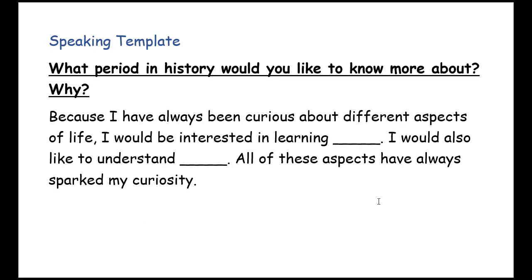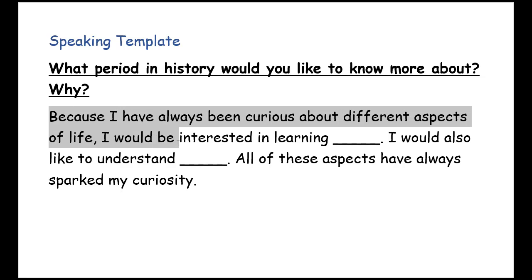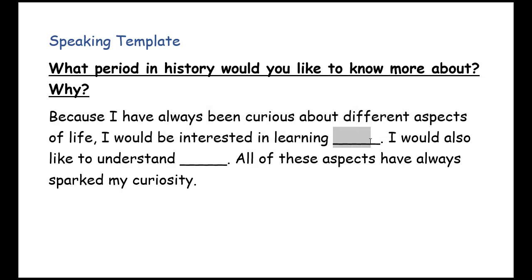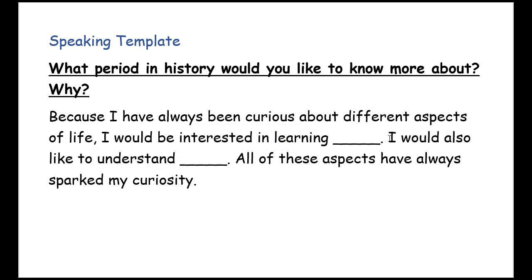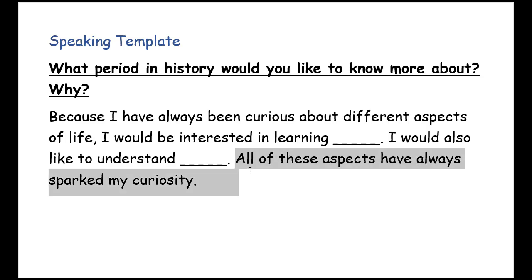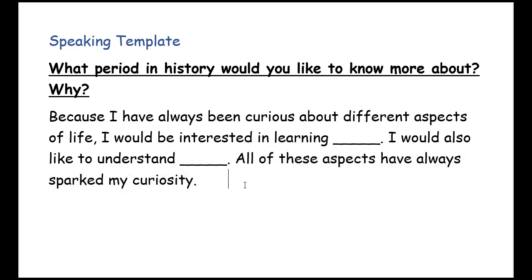The next question is: 'What period in history would you like to know more about? Why?' You can start with 'Because I have always been curious about different aspects of life, I would be interested in learning...' and talk about one specific aspect. Then say 'I would also like to understand...' and give some extra information. Conclude with 'All of these aspects have always sparked my curiosity.'